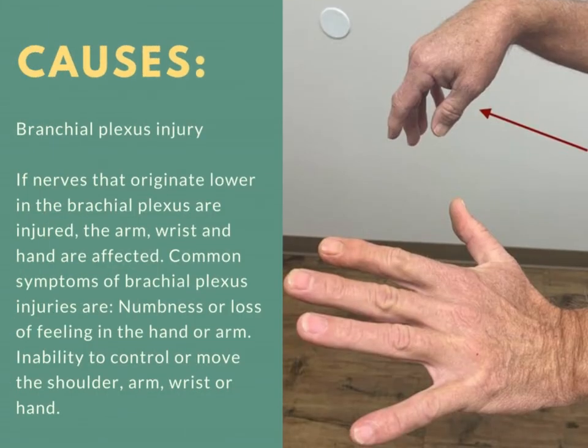Another cause of wrist drop is brachial plexus injury. When the nerves that originate lower at the brachial plexus are injured, the arm, wrist, and hands are affected, leading to numbness and loss of feeling in the hand and arm, along with inability to move or control movements of the shoulder, arm, wrist, or hand.